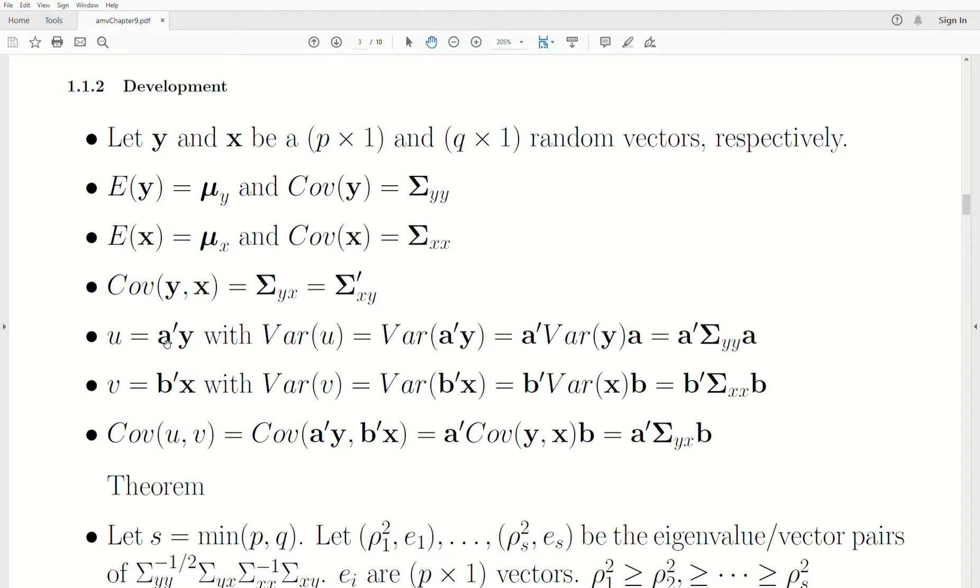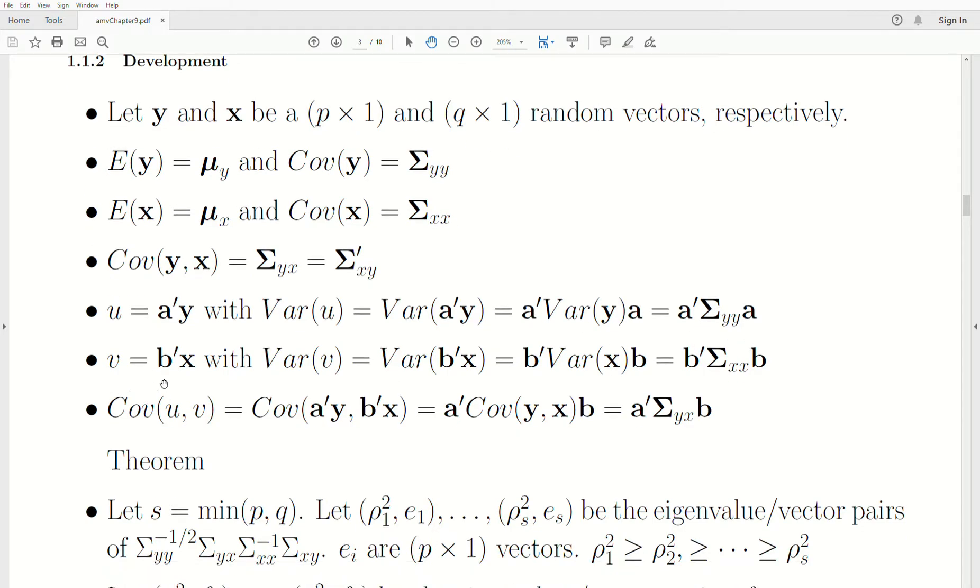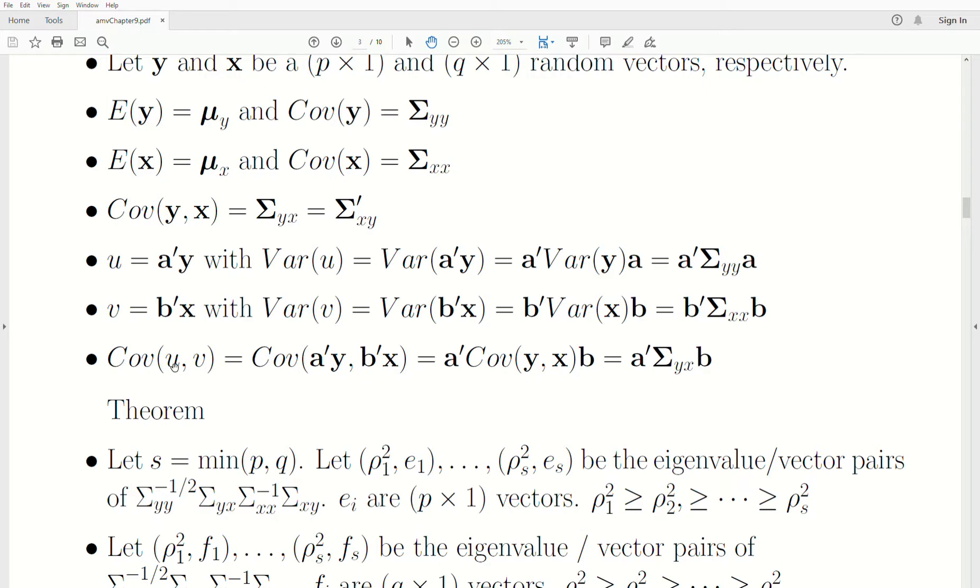Now, the linear combination of the Ys, A transpose Y, we call U. And the variance of U, as we learned from previous videos, is the constants come out front and then they're transposed out back. So that's this, but the variance of Y was sigma YY. And the same way with the linear combination of the Xs, we call it V. So the variance of V is going to be B transpose, sigma XX, B. The covariance between U and V is this. We plug in what U and V are. The constants come out front and they're transposed out back. And this is it. That's the covariance.